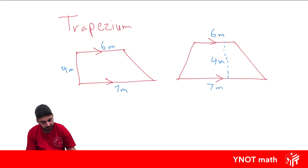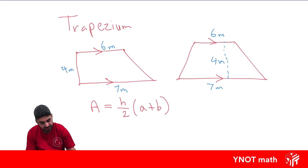To work out the area of the trapezium, it's going to be half of the height — so height over 2 — times the two parallel sides added together. In this case the height is 4, so it's 4 over 2 times the two parallel sides added together.